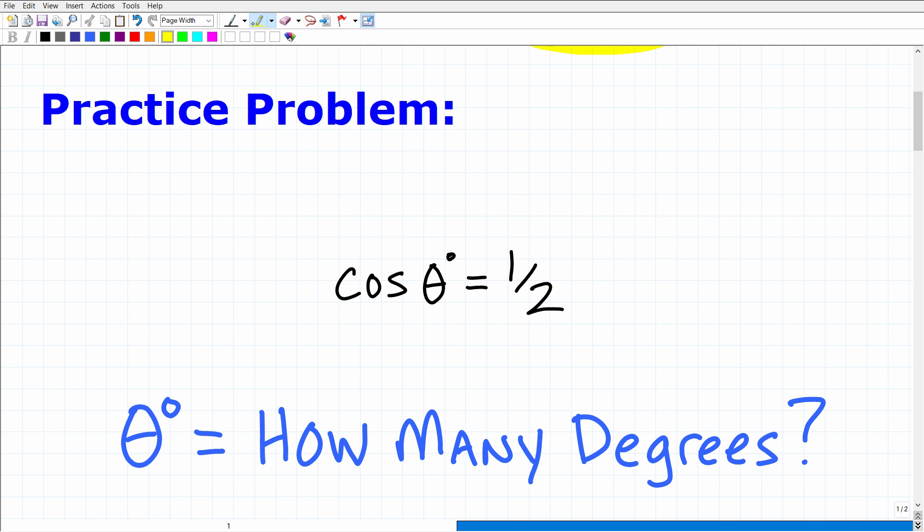So basically, for this particular problem, do not use your calculator. Of course, you should be able to know how to use your calculator to answer this question, but in this case, do not use your calculator. But here's the question. You have an angle theta, so the cosine of this angle theta is equal to one-half. How many degrees is this angle?